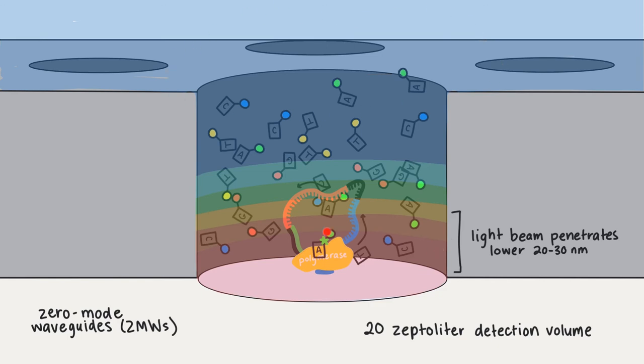What happens is the light from the beam at the bottom penetrates through the lower 20 to 30 nanometers of the chamber, creating a detection volume of 20 zeptoliters. That's 10 to the negative 21 liters. What this means is that the camera below the ZMW can't really see past the 30 nanometer mark, which is what we want. This is our detection zone.